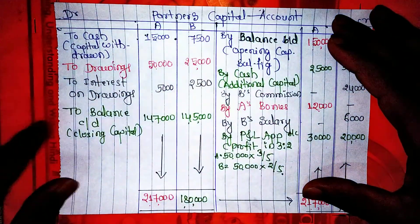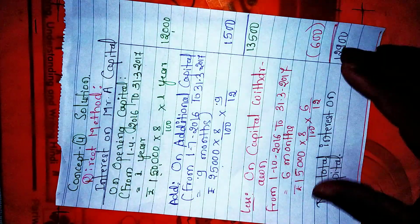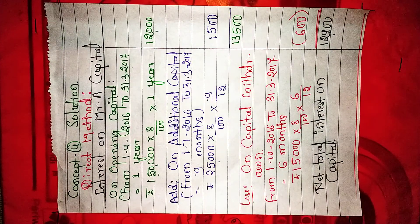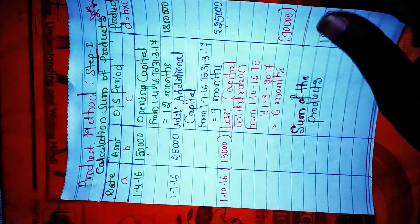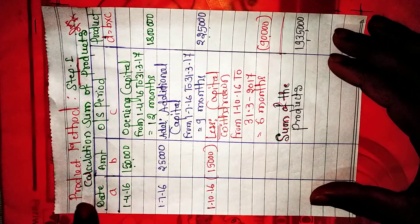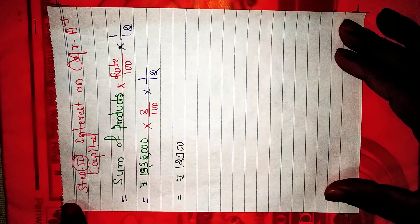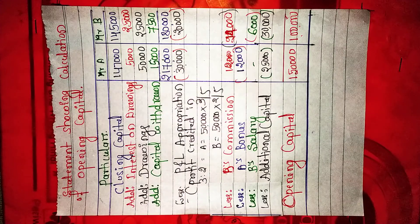The next student asked for the answer to concept number 4. Step number one: enter the capital. Step number two: interest on capital. This is the direct method. For the product method, step number one: enter the capital. Step number two: calculate the product. Step number three: apply the formula and you get the answer. You can also calculate the opening capital by following the steps.